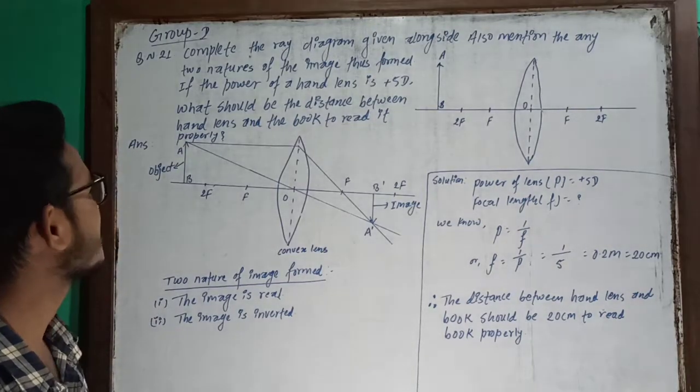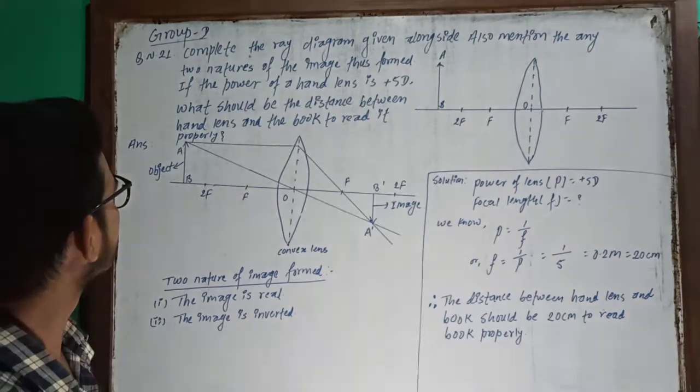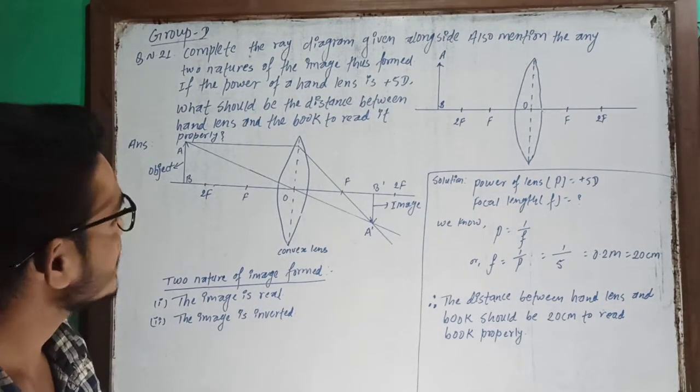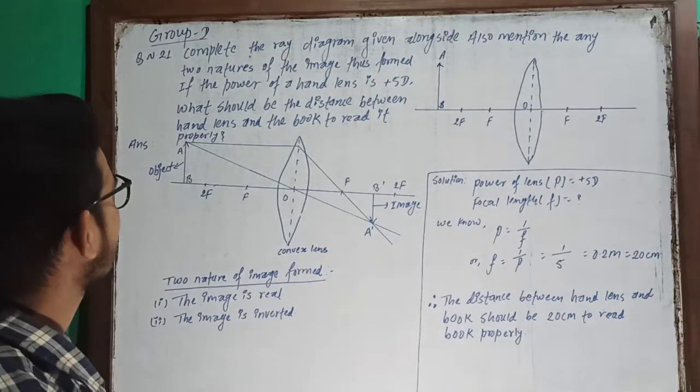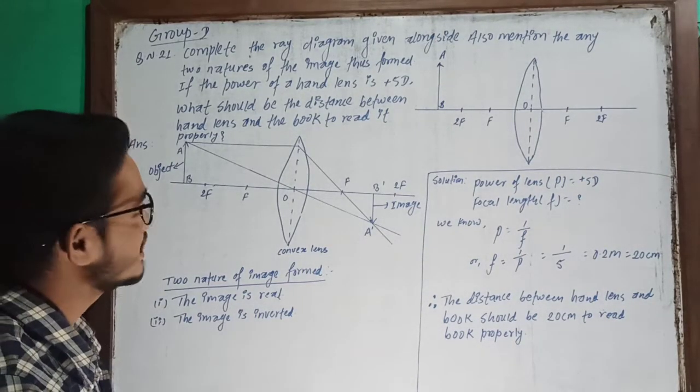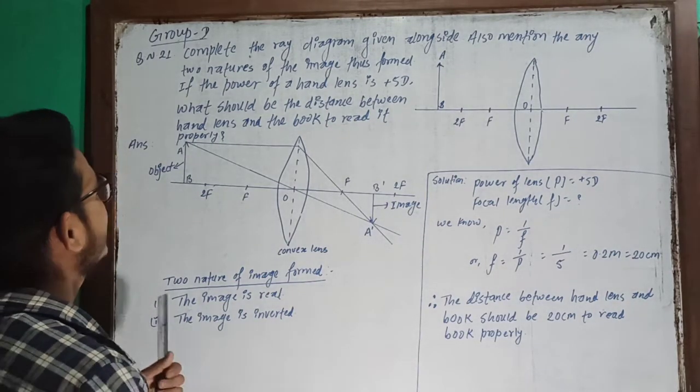Namaste. Today I am going to teach about question number 21, Group D. This question is R CDC question 2073. The chapter is light, physics chapter, physics part of the question.